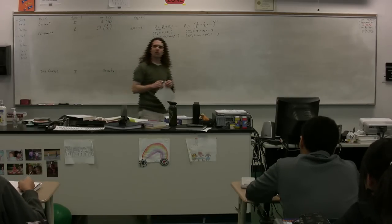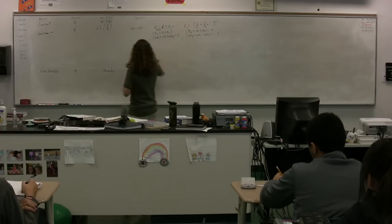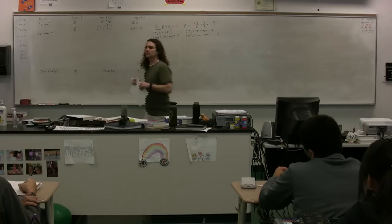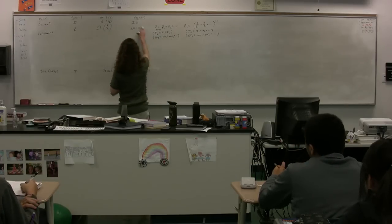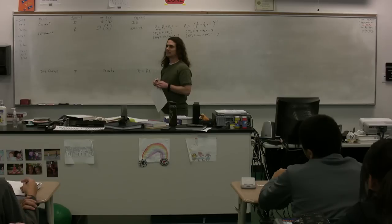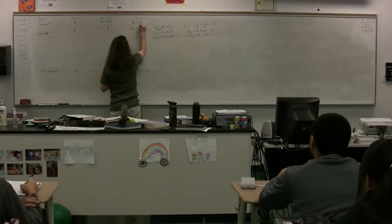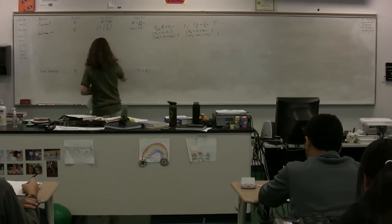We have two different equations for current. One is V over R, which we already have. More basically, current equals delta Q over delta T for average current, or dQ/dt for instantaneous current.